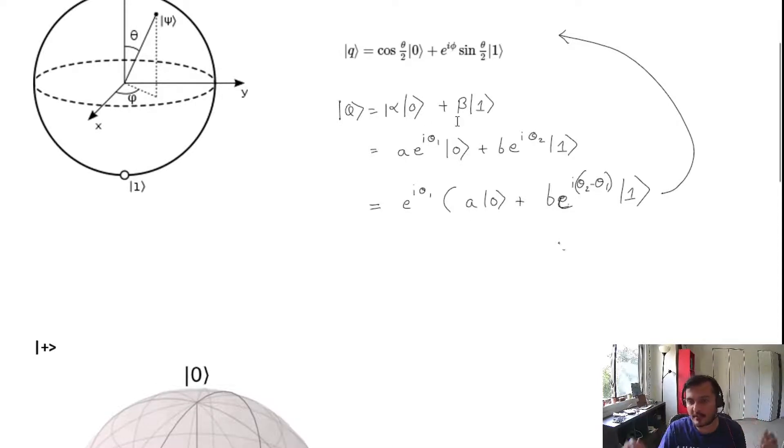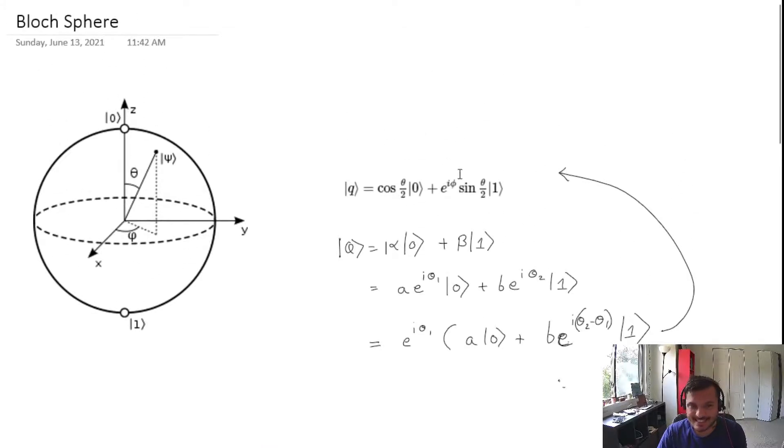Or modulus alpha squared plus modulus beta squared is one. That's one constraint, and the overall phase doesn't really mean a thing. It's not a physical quantity. Doing some math and manipulations, this is how you can cast a qubit. A qubit has basically two independent degrees of freedom, physical degrees of freedom: theta and this angle phi.